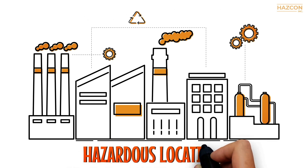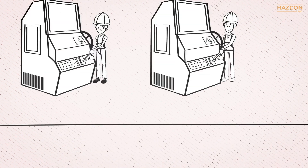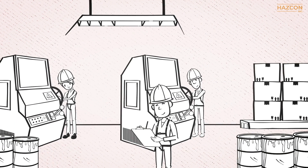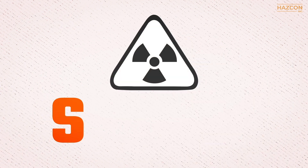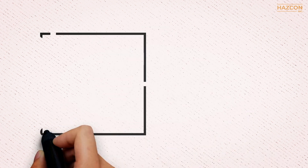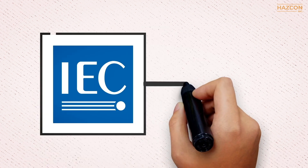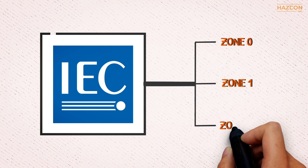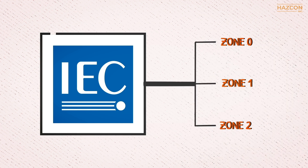Therefore, it is required that these products be designed and constructed in compliance with safety standards in order to be safe for use in such hazardous locations. As per IEC standards, the classified areas are categorized into three groups: Zone 0, Zone 1, and Zone 2.